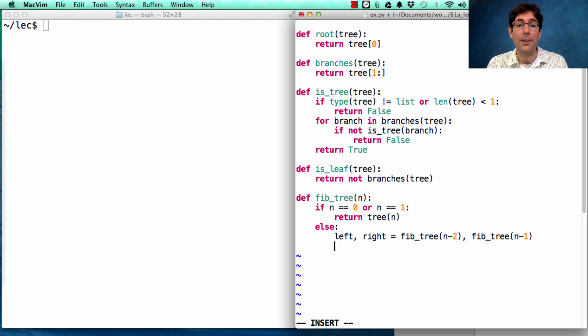Now, how do I get the root value? I do it by getting the root value of the left and adding that to the root value of the right. Now, I can return my Fibonacci tree with the nth Fibonacci number. That's the root value. And what are the branches? Well, they're just left and right.